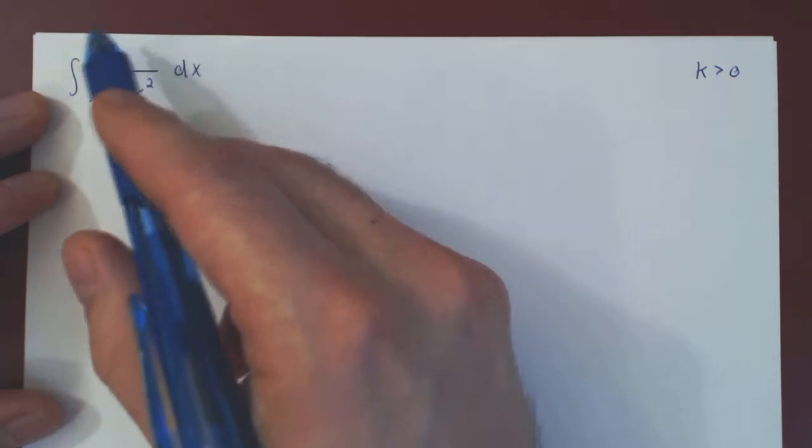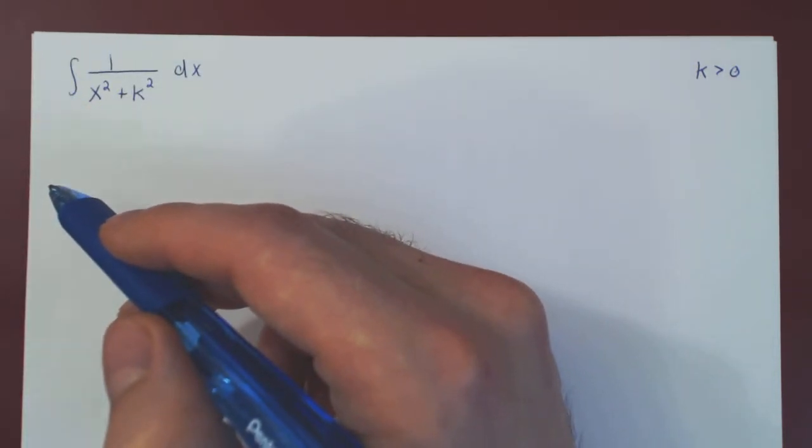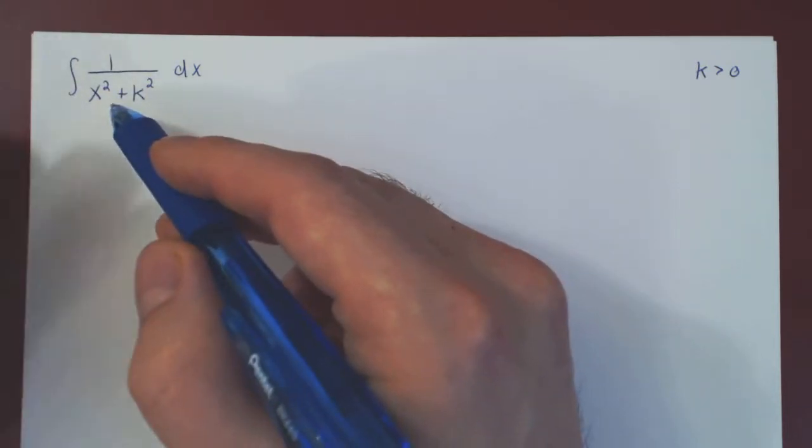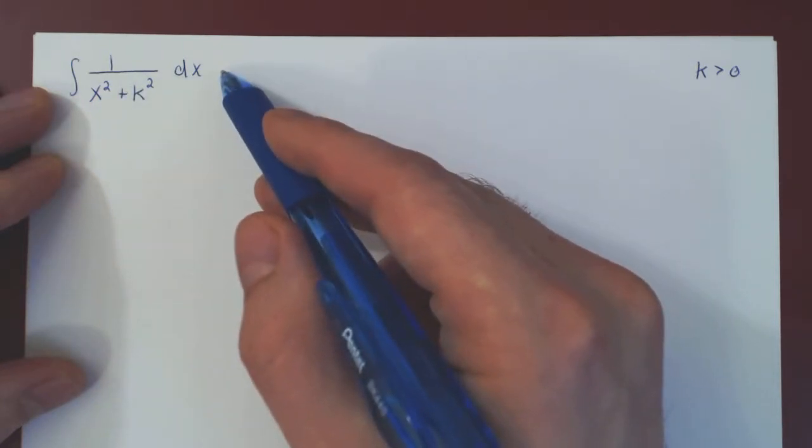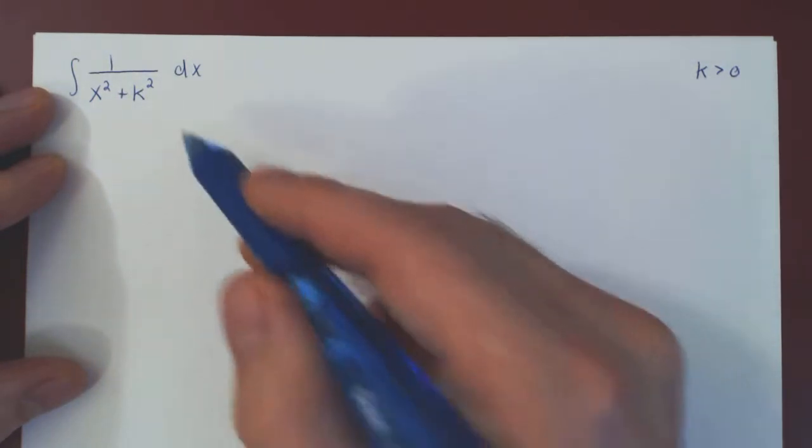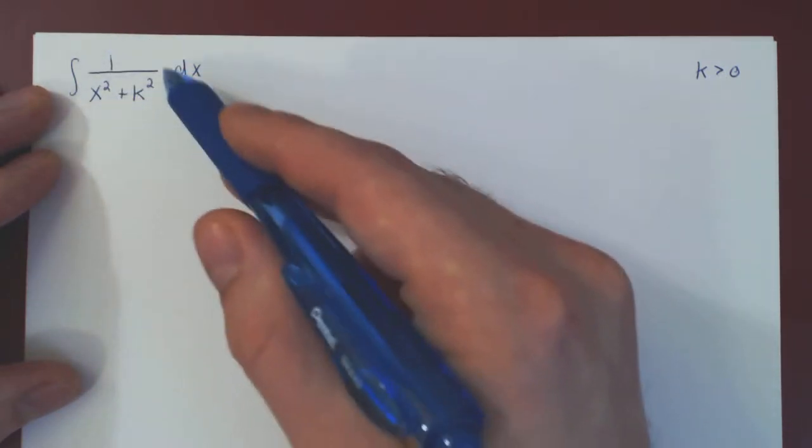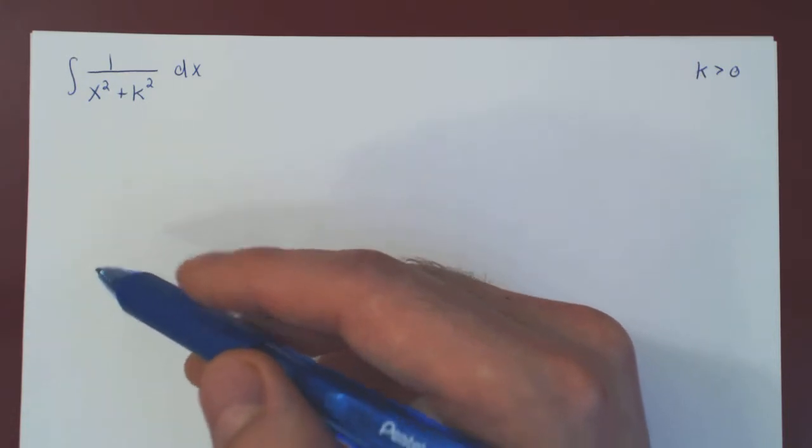So whenever this integral comes up in integrating a rational function using the method of partial fractions, you will be able, if you remember, to use the actual answer that we'll come up with in this video and not have to re-derive it every time it comes up, as this can come up fairly frequently when we're dealing with irreducible quadratic factors.